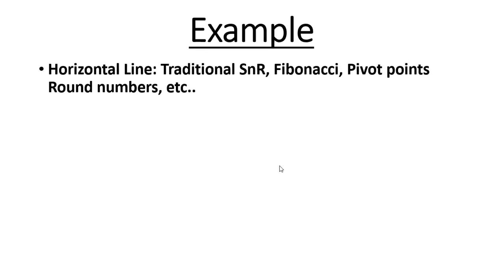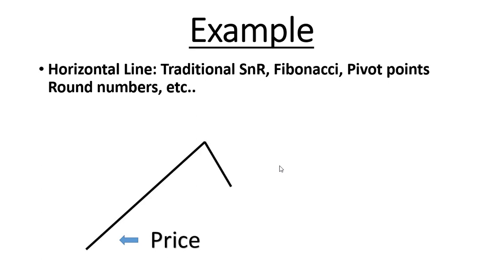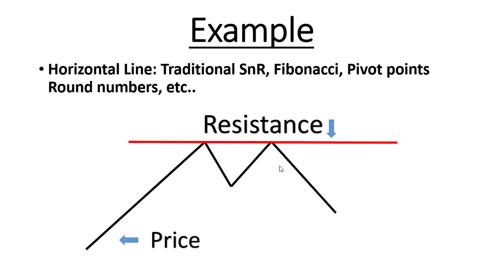First type — same as before: horizontal lines — support and resistance, Fibonacci, pivot points, and round numbers, etc. So aside from making a bounce down, it will make a bounce two times. And our red line is our resistance line or zone.